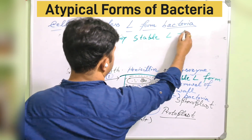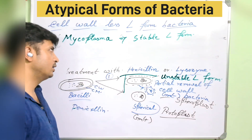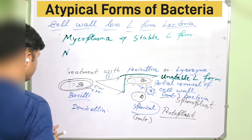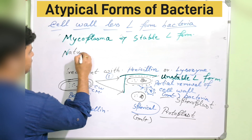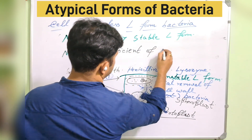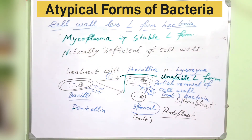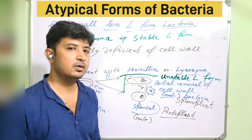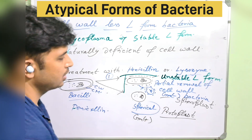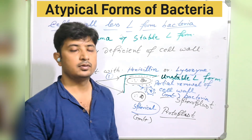The stable L-form is represented by Mycoplasma. That is why I told you to stop classifying Mycoplasma as a pleomorphic bacterium — classify it under L-form bacteria or cell wall-deficient bacteria. Mycoplasma is naturally deficient of a cell wall, so it is a stable L-form. You do not need any treatment to remove its cell wall because it does not have one. In contrast, spheroplasts and protoplasts are unstable L-forms because bacteria can regrow their cell walls after removal of the inducing compounds.